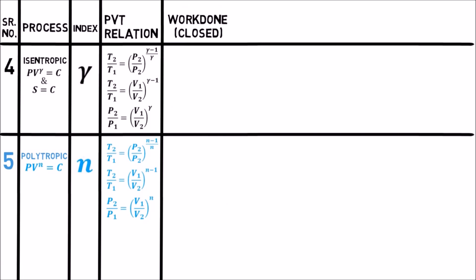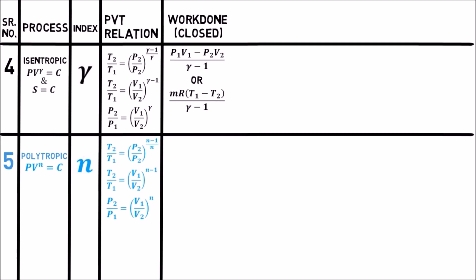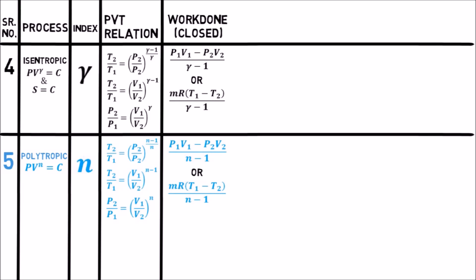For isentropic process, the work done is (P1V1 − P2V2) divided by (gamma − 1). You can replace PV = mRT to get mR(T1 − T2) divided by (gamma − 1). Lastly, the work done for polytropic process is same as isentropic process, but instead of index gamma, the polytropic index n will come. These work done formulas are for closed systems only, showing area under the PV diagram about the volume or x-axis, derived from integration of P dV.